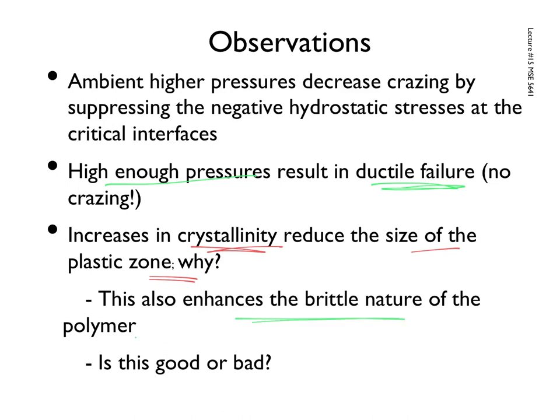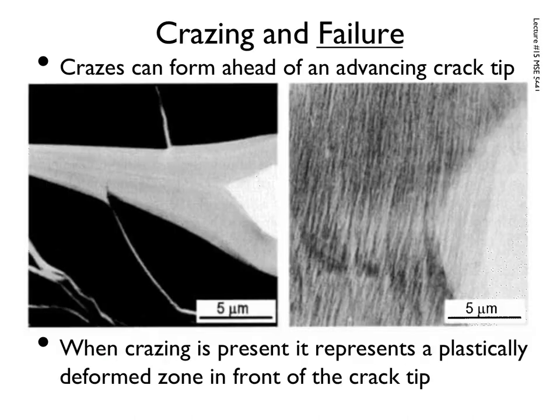This also enhances the brittle nature of the polymer. Is that good or bad? Mostly bad, but with context. If I want something that's very rigid and not going to deform much, then having increases in crystallinity is a good idea. In engineering terms, if the structure deforms by 1%, the plane has crashed. It depends on what you're asking the material to do. In many cases, the role of these materials in the overall structure is to be ductile.